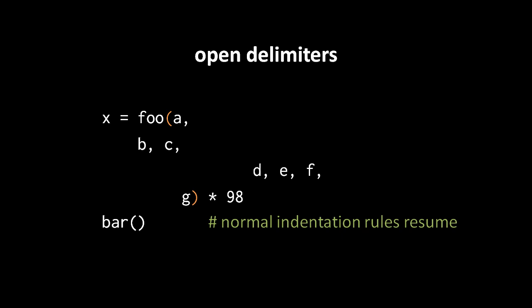So here after the end parenthesis, we can finish off the line with asterisk 98, but on the next line, the usual rules resume. So the call to bar has to be aligned how you see it here, has to be aligned with the statement which precedes it, which starts with x equals.